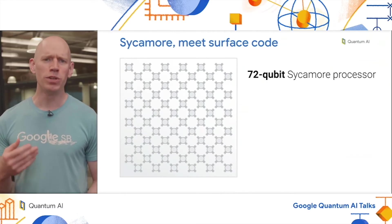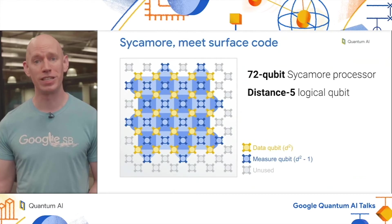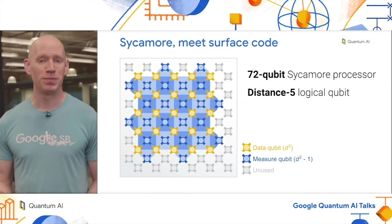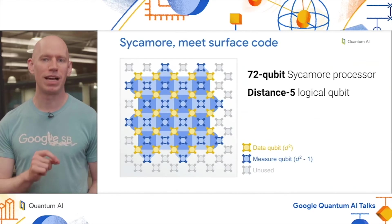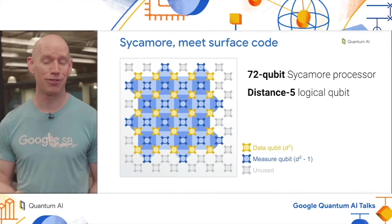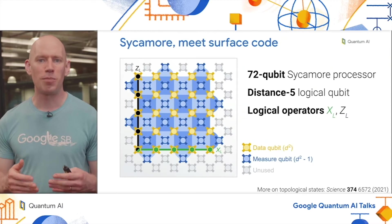In order to implement this, we use a new 72 qubit Sycamore processor, which perfectly fits a distance five surface code logical qubit. This takes up 49 of the qubits, which are made of 25 data qubits, the five by five array in gold, and 24 measure qubits in blue. Each measure qubit is responsible for projectively measuring a stabilizer operator. One way to think about how this works is we have 25 data qubits, so the Hilbert space has dimension two to the 25. Each projective measurement of the stabilizers effectively divides the dimensionality in half. We divide it in half 24 times and we're left with a space of dimension two. That's our logical qubit, a distributed state that exists shared by all of the data qubits.